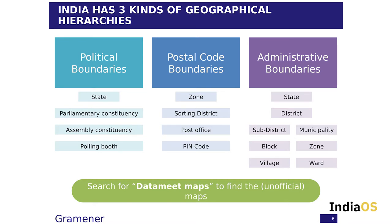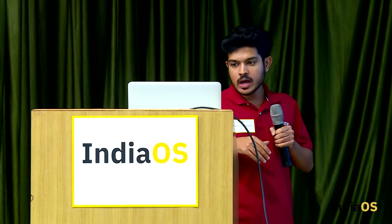In India there are basically three types of geographical hierarchies. First, political boundaries, which include state, parliamentary constituency, assembly constituency, and polling booths — this is where policy-making happens. Second, postal boundaries, which include zones, sorting districts, post offices, and PIN codes — completely independent of political boundaries, so one PIN code might span two different states. Third, administrative boundaries, which include state, district, sub-district, municipality, block, zone, village, and ward — again completely independent of the other two.